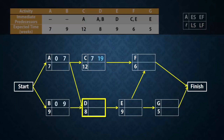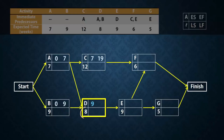D on the other hand needs A and B to finish before it can start. Since the earliest finish times for A and B are 7 and 9 respectively, and D needs both of them to finish in order to start, then the earliest time D can start is 9. In other words, the highest of the earliest finish times preceding an activity will be the activity's earliest start time. So D finishes at 8 plus 9, which gives 17.